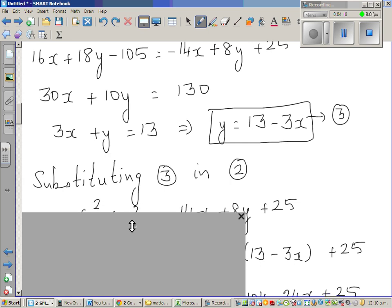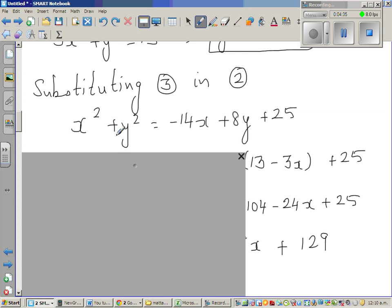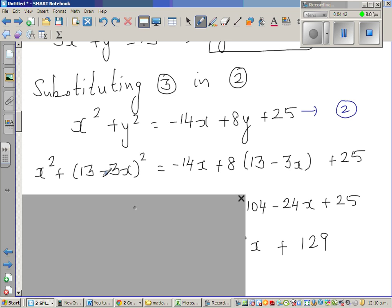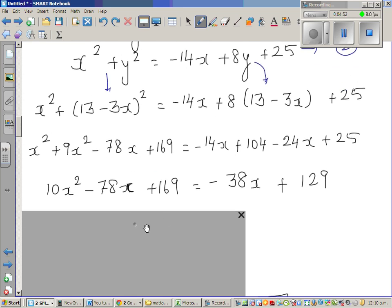I'm now substituting equation 3 in 2. This is equation 2. So in place of y, I can put 13 minus 3x in both these places. That's what I've done in the next step. This is equation 2, this is rewritten equation 2. And this is, this becomes this. And now this is a simple expansion. You can go over the steps.